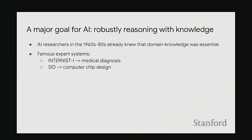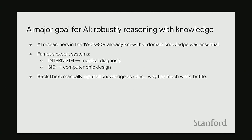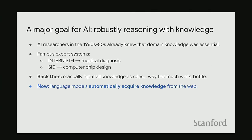This is something AI researchers have been interested in since the field began. Early applications in the 60s and 80s included expert systems for medical diagnosis and computer chip design. The big obstacle back then was that you had to manually input all knowledge required — an expert had to write all the rules, and the system was very brittle. But in 2022, language models can automatically acquire knowledge from the web, giving us an exciting opportunity to revisit how to use knowledge in AI.